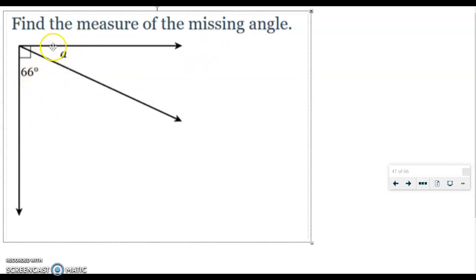We also know that this is complementary, meaning that the two angles add up to equal 90 or form this right angle here. Alright, so now I can take 66 plus A and add it together and set it equal to 90.